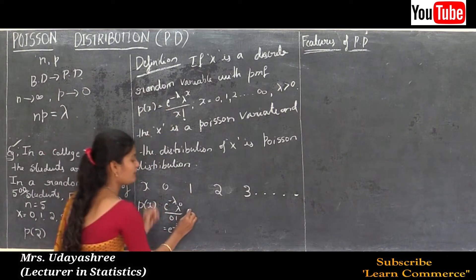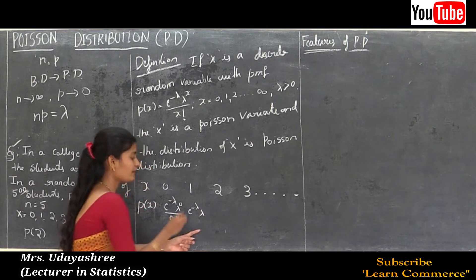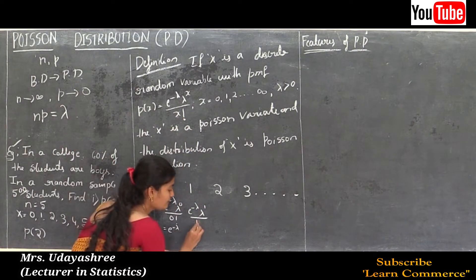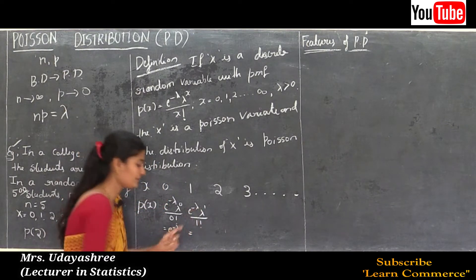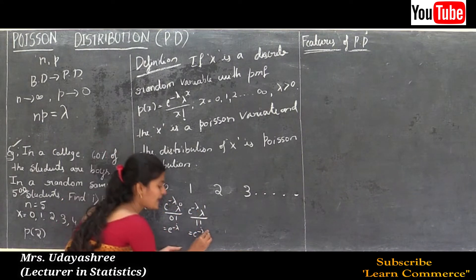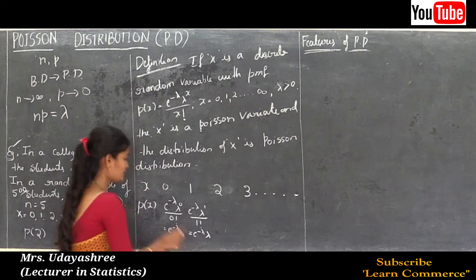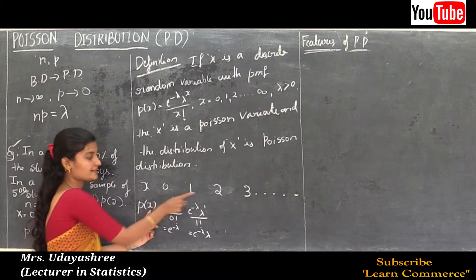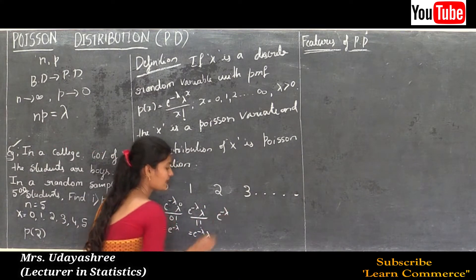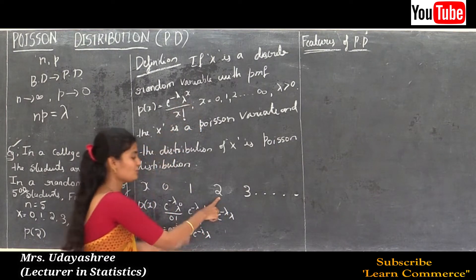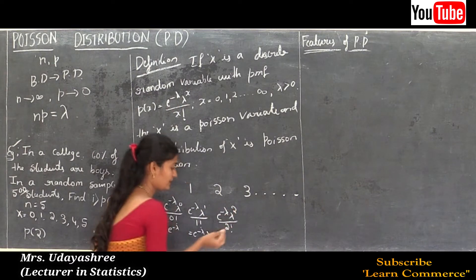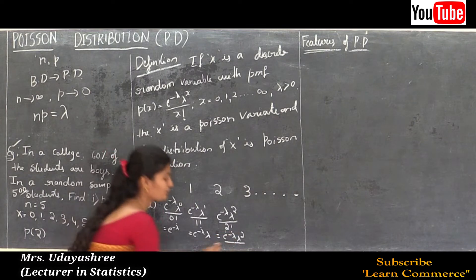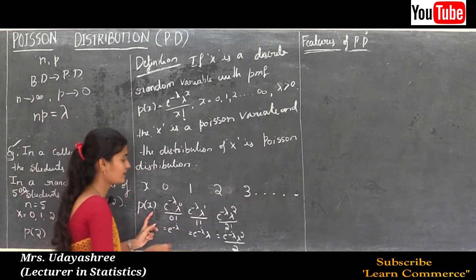For P(x = 1): substituting x = 1, we get e^(−λ) · λ^1 / 1! = e^(−λ) · λ. For P(x = 2): substituting x = 2, we get e^(−λ) · λ^2 / 2! = e^(−λ) · λ² / 2.